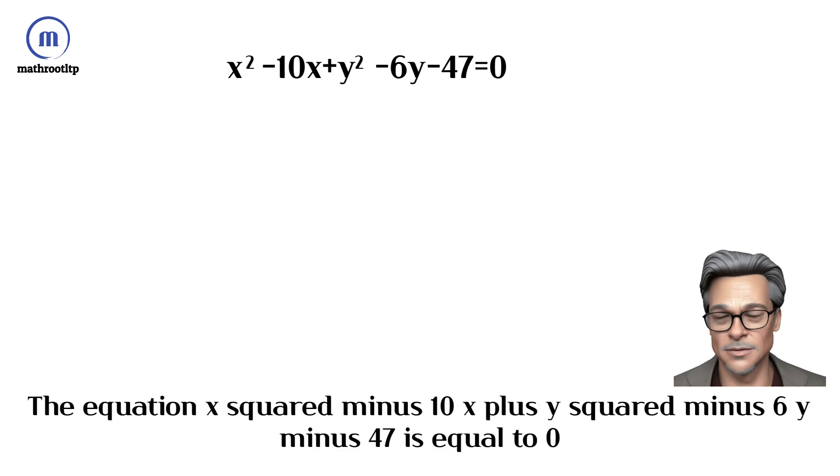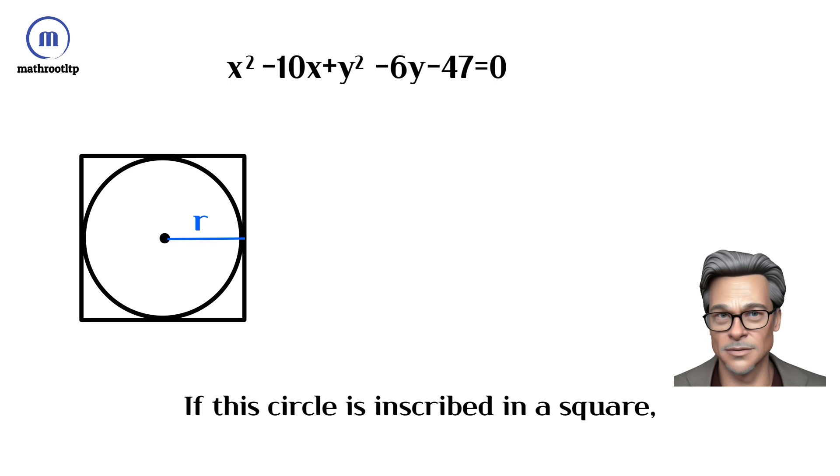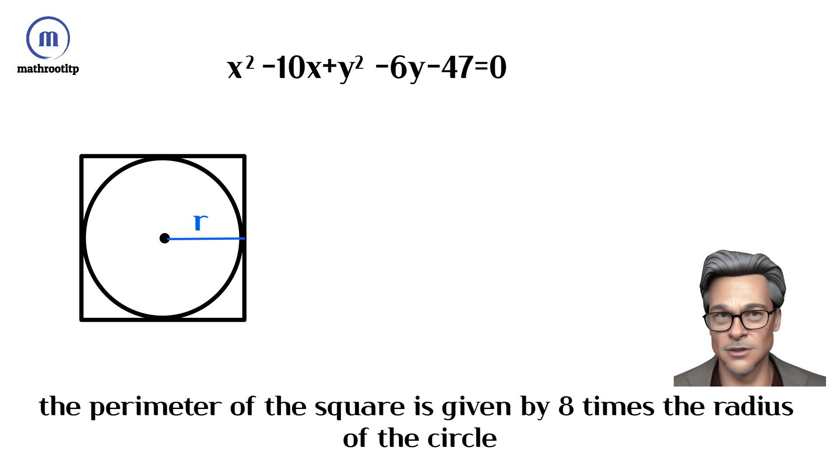The equation x squared minus 10x plus y squared minus 6y minus 47 equals 0 represents a circle in the xy-plane. If this circle is inscribed in a square, the perimeter of the square is given by 8 times the radius of the circle.